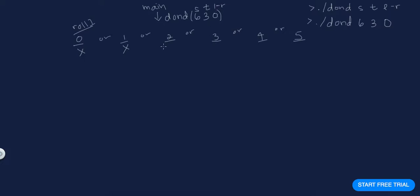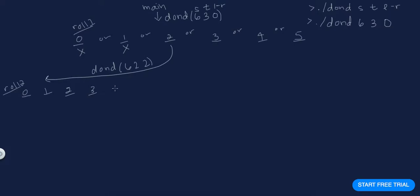Let's see what happens if I roll a two on roll one. I call DOND with 6 sides, 2 rolls left, and last roll = 2. On roll two I could roll zero, one, two, three, four, or five. Since I rolled a two last time, if I roll a two, one, or three I immediately lose.